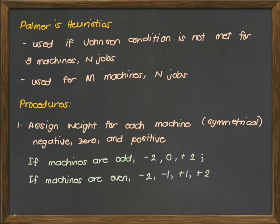Now, if the machines are even, we can use negative 2, negative 1, positive 1, positive 2, because you cannot put zero in the middle since it's even. You can use negative 3, negative 2, negative 1, positive 1, positive 2, positive 3 if there are 6 machines. So if the number of machines is odd, you can include zero. But if even, it's impossible to include zero.